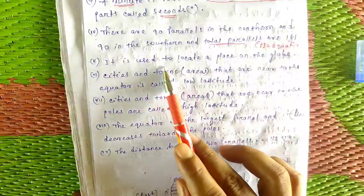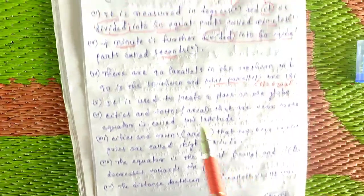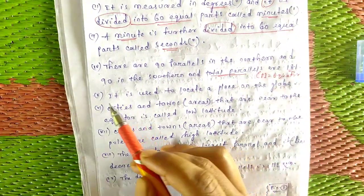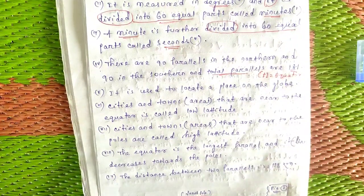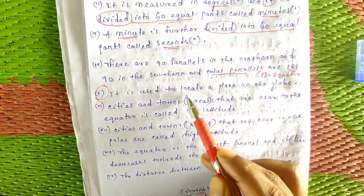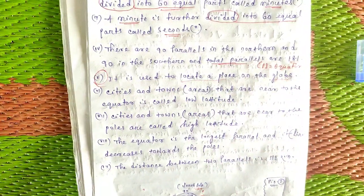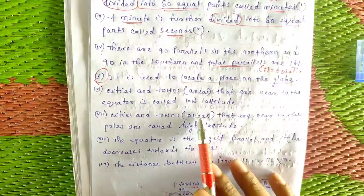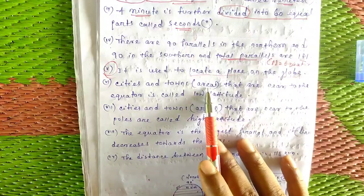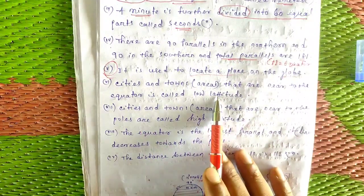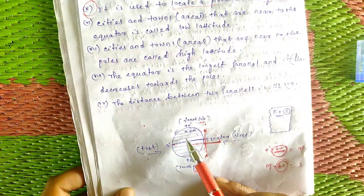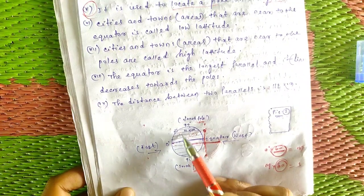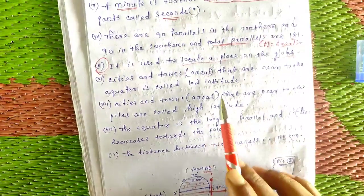Latitude is used to locate a place on the globe. Cities and towns that are near to the equator are said to be at low latitude.